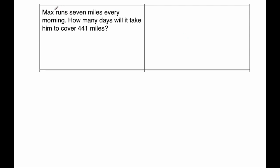Right, our next question says, Max runs 7 miles every morning. How many days will it take him to cover 441 miles? So if we divide 441 by 7, we'll find how many days it takes him to run that distance. So 4 divided by 7 is 0, remainder 4.